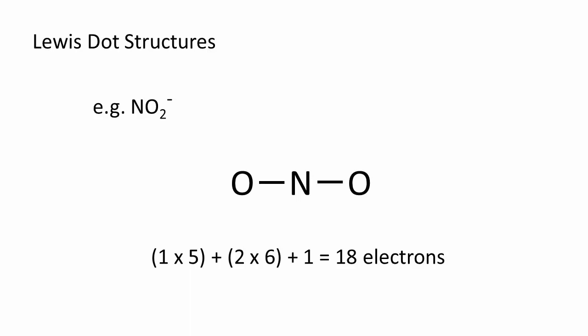To complete the octet of each of the two surrounding oxygen atoms, we need to add 6 electrons in the form of 3 lone pairs per oxygen atom. As we do this for each of the two oxygen atoms, this is another 12 electrons. This brings our electron count to 16.